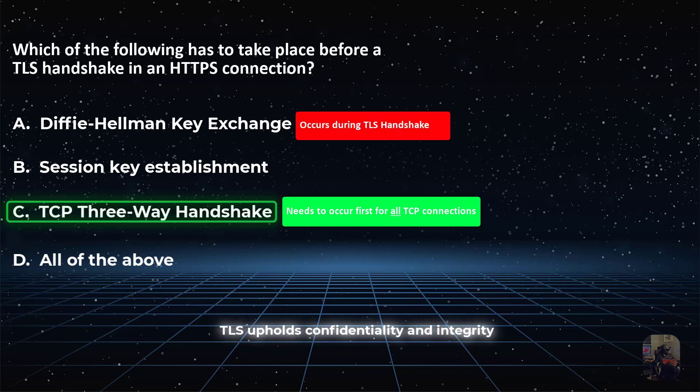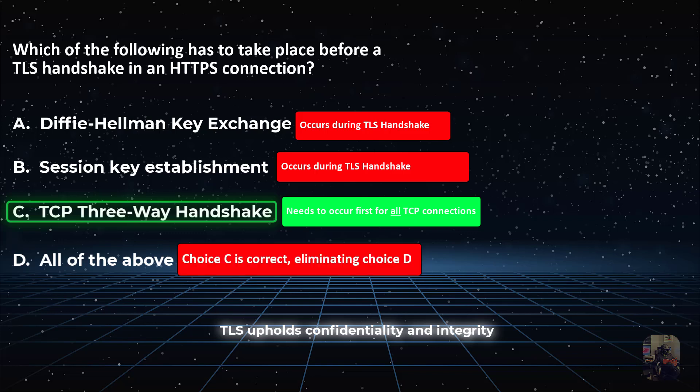It's not choice A because a Diffie-Hellman key exchange occurs during the TLS handshake, which occurs after the TCP handshake. It's not choice B because the session key is established during the TLS handshake and not the TCP handshake. And it's not choice D because the answer asks for what happens before the TLS handshake, with the correct answer being choice C. Choice C being the correct answer eliminates choice D.